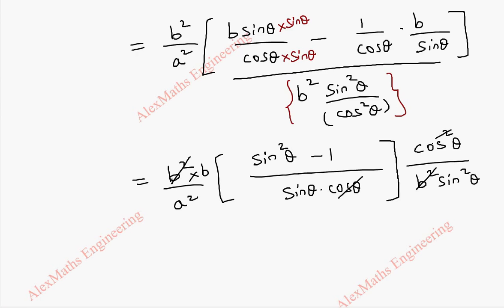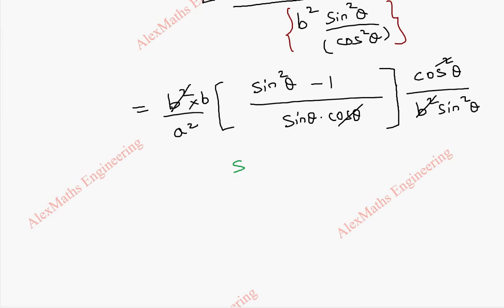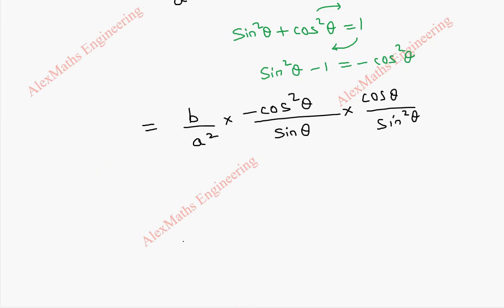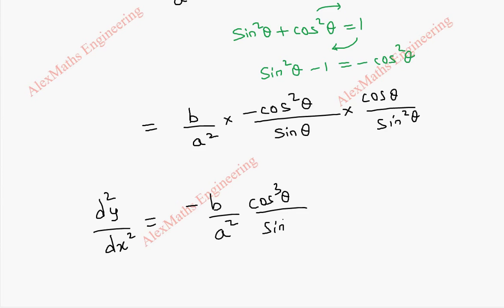In the numerator we have a common LCM of sinθ·cosθ, so this will become b sin²θ. We can also take b common, so this becomes b(sin²θ − 1). This term goes to the numerator as a reciprocal product, giving cos²θ / (b² sin²θ). We can cancel b² and b. By the trigonometric identity sin²θ + cos²θ = 1, sin²θ − 1 = −cos²θ. So finally d²y/dx² = −(b/a²) · cos³θ / sin³θ.